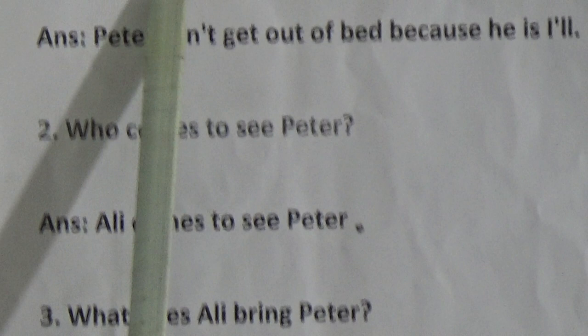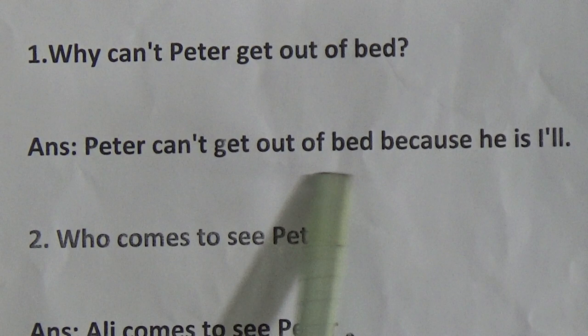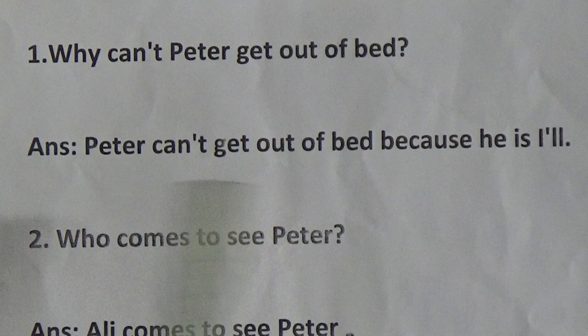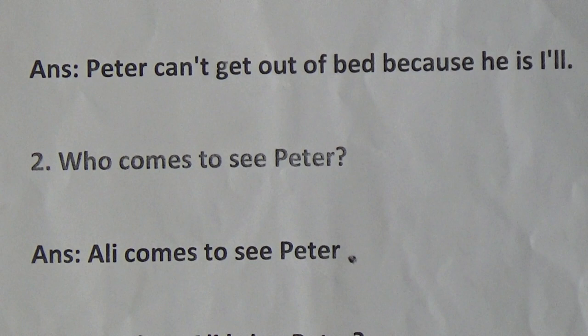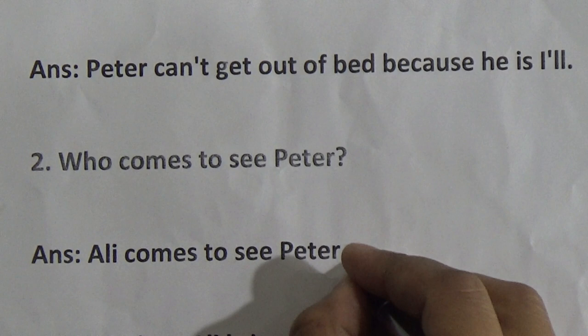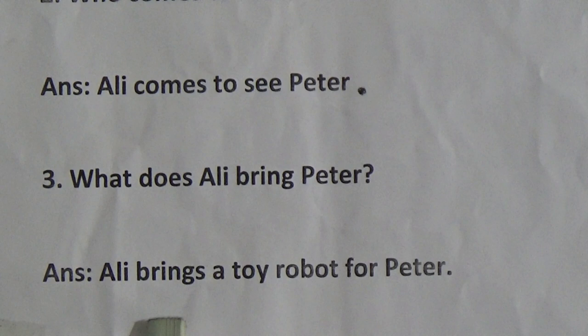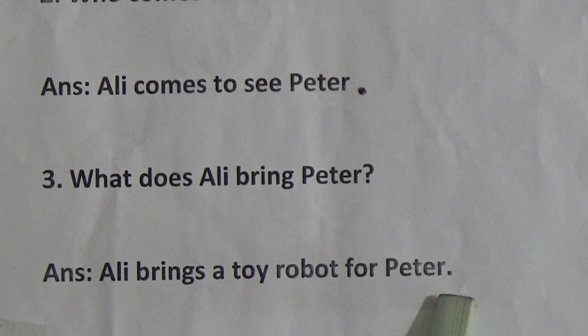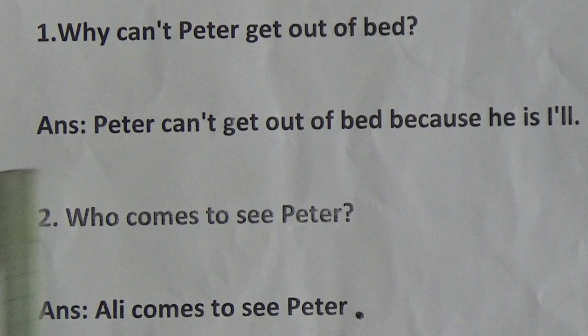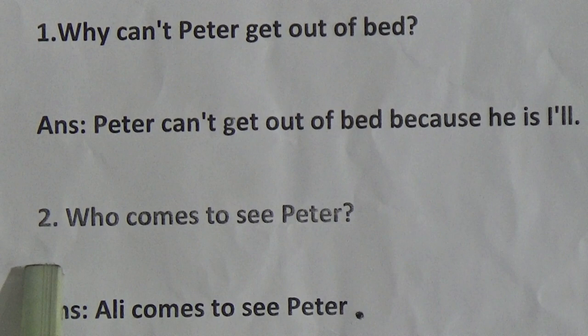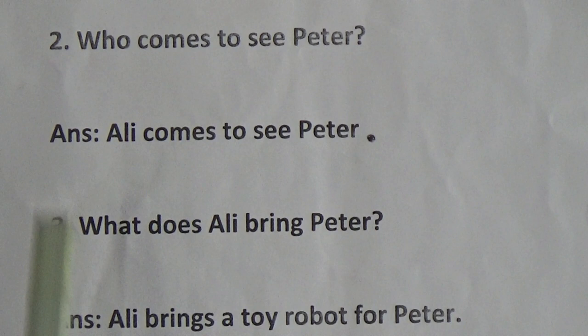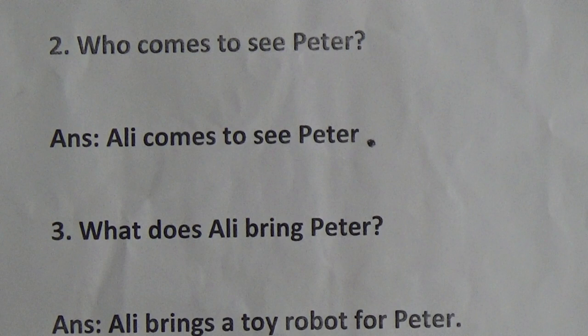Again, number 1: Why can't Peter get out of bed? Answer: Peter can't get out of bed because he is ill. Number 2: Who comes to see Peter? Answer: Ali comes to see Peter. Number 3: What does Ali bring Peter? Answer: Ali brings a toy robot for Peter.